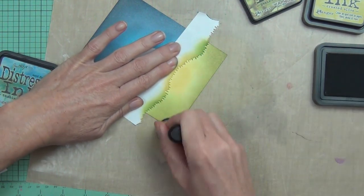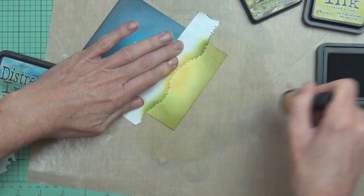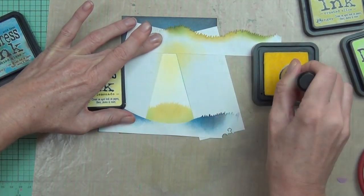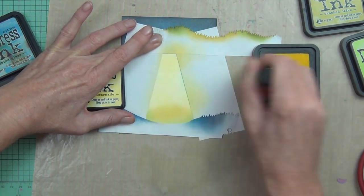I also did a similar thing with the sky. I used a lighter blue around where the beam of light's going to be and came in with some Black Soot around the edges, and that just added a lot of depth.